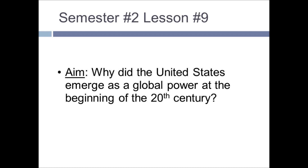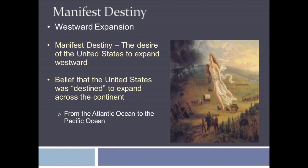Why and how did it become this powerful? The first thing to focus on is Manifest Destiny — something we've learned about all year. Manifest Destiny was that desire to expand westward from the Atlantic Ocean all the way to the Pacific Ocean, the belief that the United States was destined to expand across the continent as a God-given right. The Louisiana Purchase, the Gadsden Purchase, and the Mexican Cession all spread the United States westward.